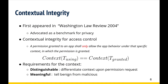We introduce a term called contextual integrity, which first appeared in the Washington Law Review and was advocated as a benchmark for privacy. In the access control domain, it can be defined based on the principle that a permission granted to an app shall only allow app behavior under that specific context during which the permission is granted. More specifically, the context when the permission is used shall be the same as the context when the permission was requested.